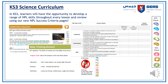In Key Stage 3 learners will have the opportunity to develop a range of HPL skills throughout every lesson and review using our new HPL success criteria pages. For example, learners may be asked to collaborate focusing on the HPL empathetic when creating a resource that they are going to present or when sharing their ideas as a group. Learners could be asked to self or peer assess aspects of work focusing on improving their meta-thinking skills, or learners could show perseverance and resilience through challenging aspects of the topics that they're currently learning. Learners will then engage with the success criteria page at the end of a topic to really review the skills that they've developed and skills that they want to work on by using the red amber green system. It's extremely important learners engage with those HPL opportunities to give them a well-rounded skill base as they move from Key Stage 3 to Key Stage 4 and beyond.